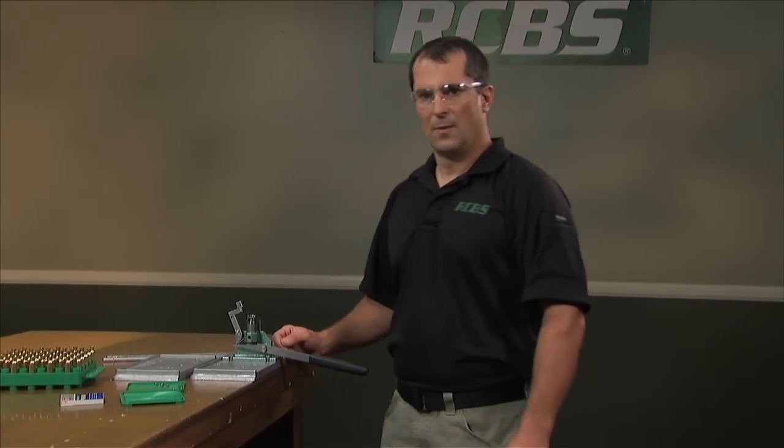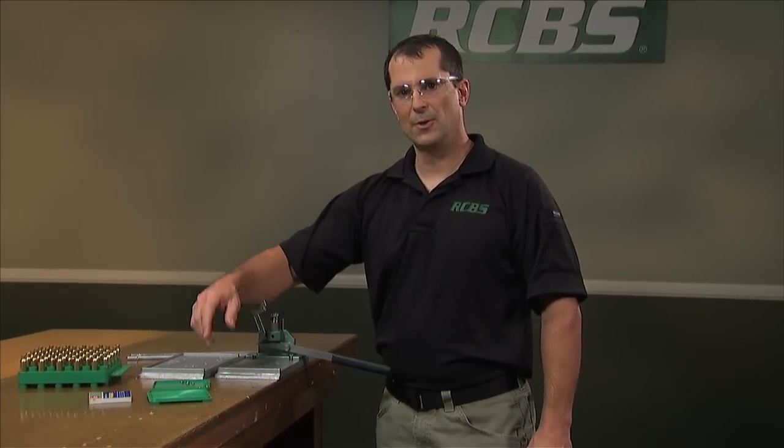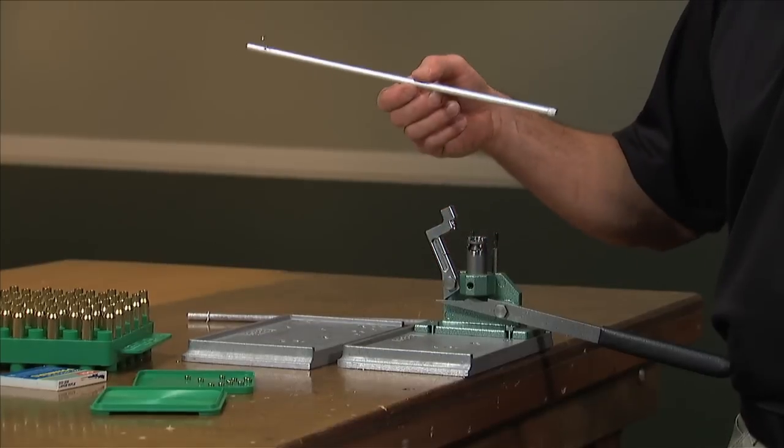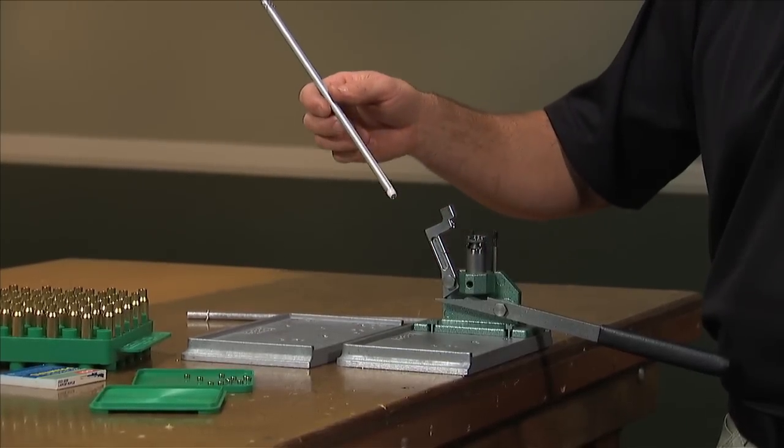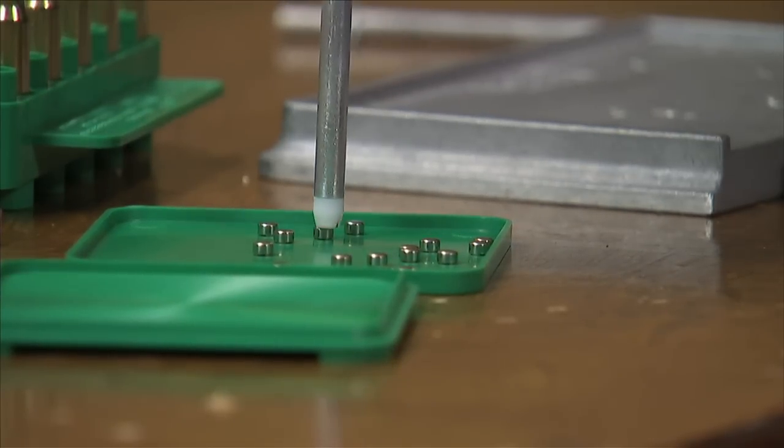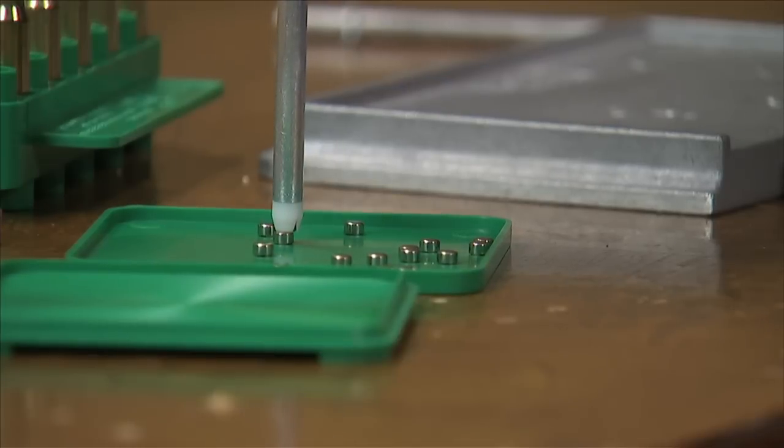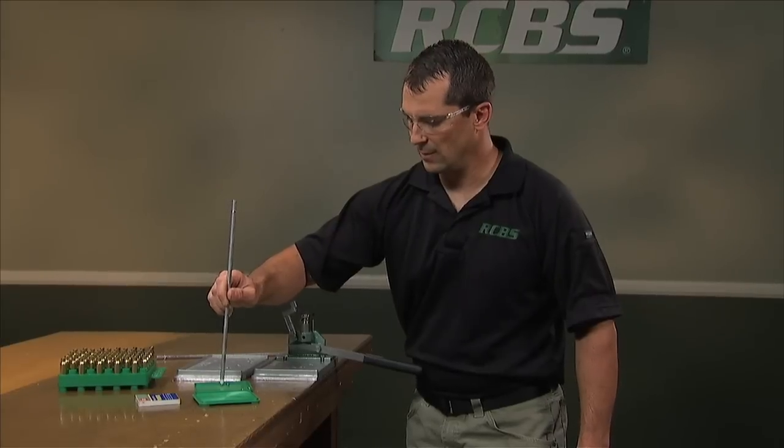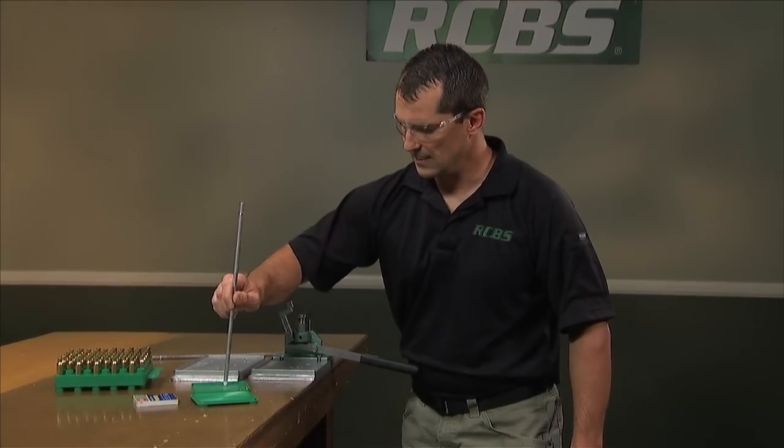To use this unit, first step is to dump primers onto your tray. In this instance, we're loading 308 Winchester cartridges, so we're going to use the large primer tube. You dump some primers on the tray, flip them over cup side down. You just run the pickup tube over the primers and capture them as such.